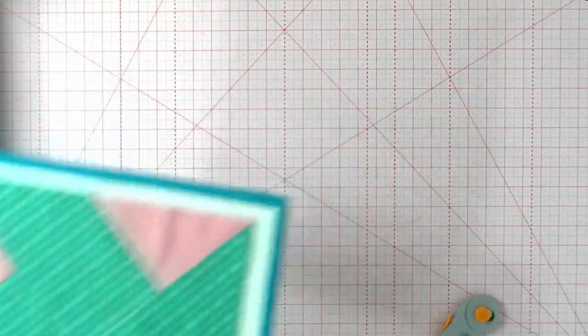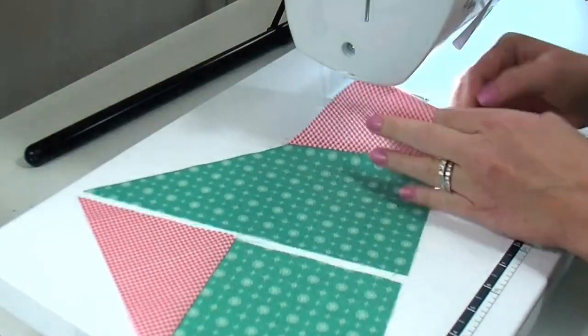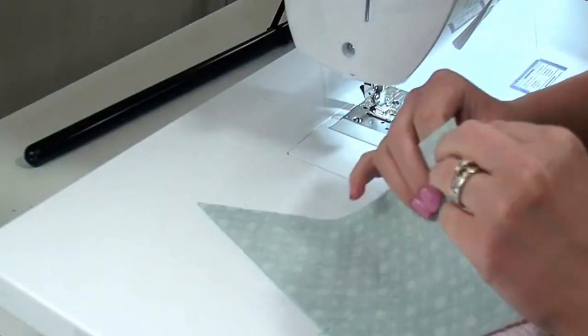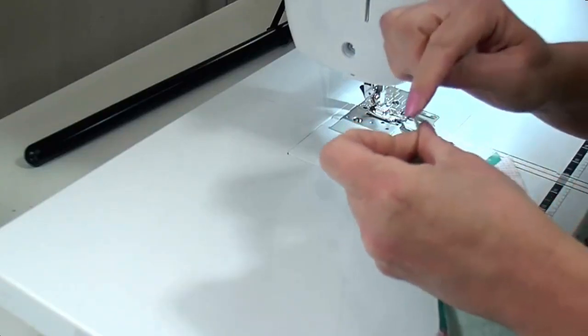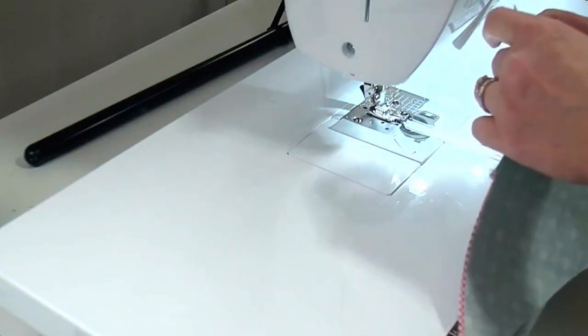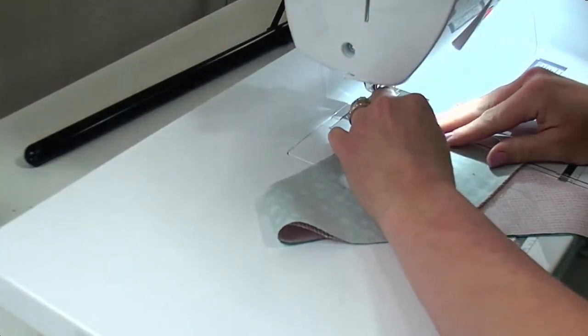Let's go to the sewing machine. All right, so we've got these two and I'm just going to put them right sides together. And we're going to start at the point, this point, this point, the 90 degree point, not the 180 degree point, and sew those down. Same with the opposite side, right sides together.